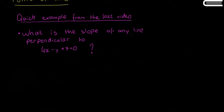The question asks: what is the slope of any line perpendicular to 4x - y + 7 = 0? We know that if m1 and m2 are perpendicular lines, the product of their slopes is -1. So we'll find the slope of this line, and then we can find the slope of the perpendicular line.